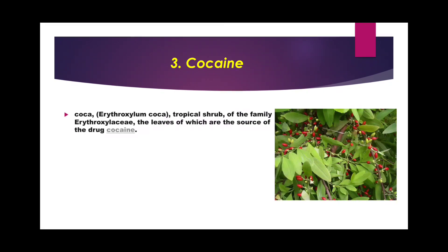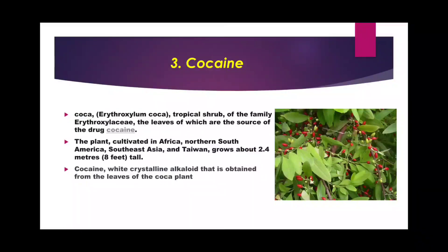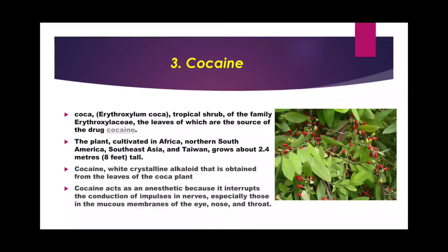Cocaine is derived from a plant known as Erythroxylum coca, a tropical shrub of the family Erythroxylaceae. The leaves are the source of the drug cocaine. The plant is cultivated in Africa, North and South America, and Southeast Asia, and grows about 2.4 meters (8 feet) tall. Cocaine is a white crystalline alkaloid obtained from the leaves of the coca plant. It acts as an anesthetic by interrupting nerve impulse conduction, especially in the mucous membranes of the eye, nose, and throat.